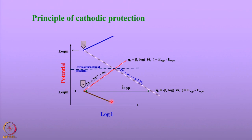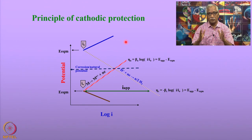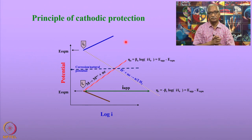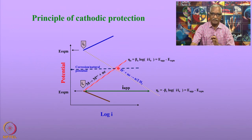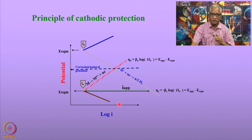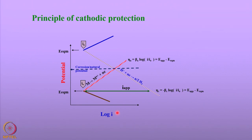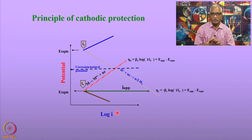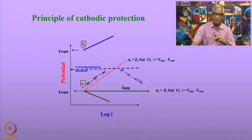Let me start with the principles of cathodic protection engineering. We have seen this slide in one of the earlier lectures. When you expose a metallic structure in soil or any corrosive environment, it attains a corrosion potential — also called natural potential — as shown in this diagram. This is an Evans diagram between potential and log current density for a corrosion reaction.